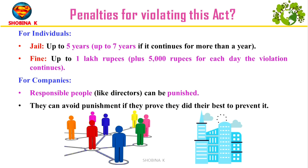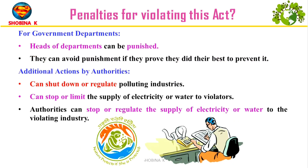What happens if someone violates this act? Individuals who violate EPA in India can face jail up to five years, and if the violation persists for more than one year, it can extend to seven years. There is also a maximum penalty of one lakh rupees, with an additional 5,000 rupees for each day the violation continues. For companies, responsible individuals like directors can face punishment, but can avoid it by proving they made genuine efforts to prevent the violation. For government departments, heads of departments can be punished but may avoid it if they prove they did their best to prevent it. Additional actions by authorities include shutting down or regulating polluting industries, and stopping or limiting the supply of electricity or water to violators.